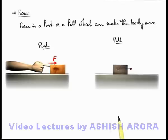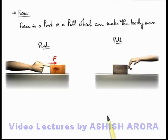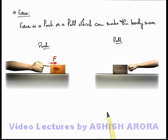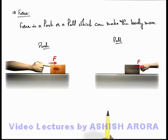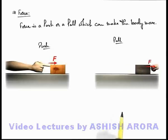Here you can see another situation where a block with a handle is placed on a surface. If we pull the handle by applying some force on it, you can see the hand is pulling the block by application of a force toward the right, so the block starts moving in the rightward direction, or in the direction of the applied force.